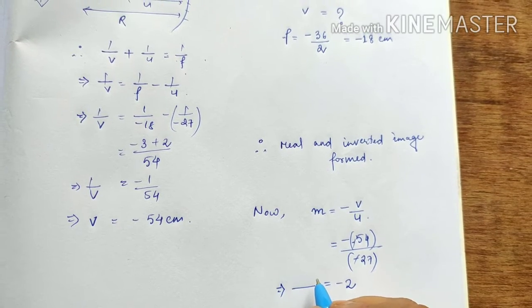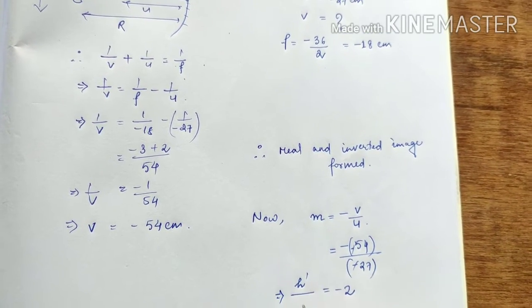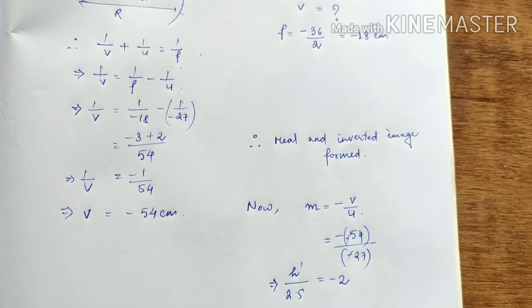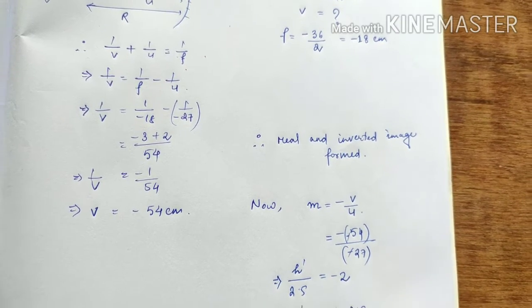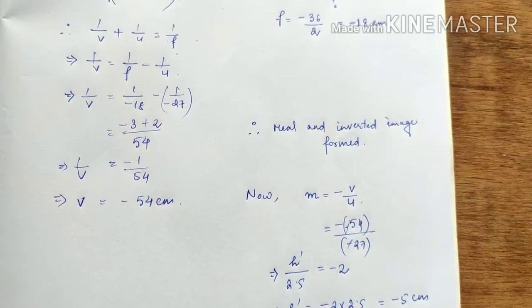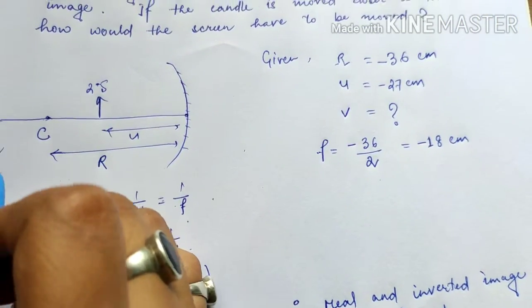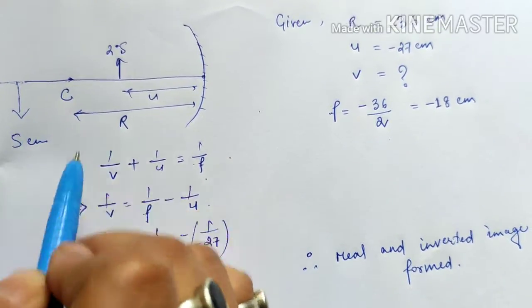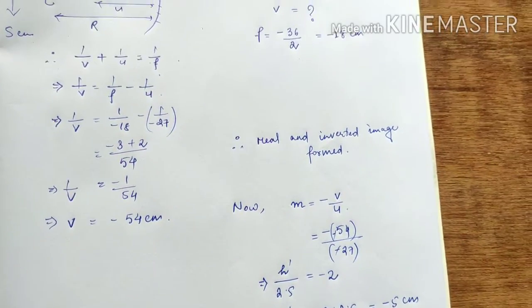Mirror magnification is also defined as the size of the image divided by the size of the object. The object size is 2.5 cm, so the image size is minus 2 into 2.5 = minus 5 cm.